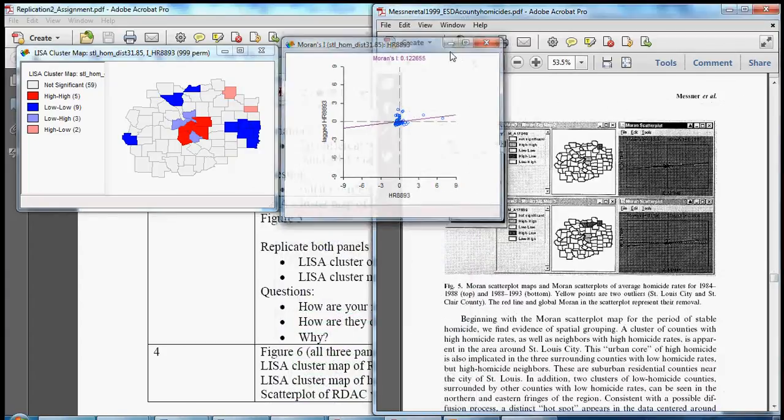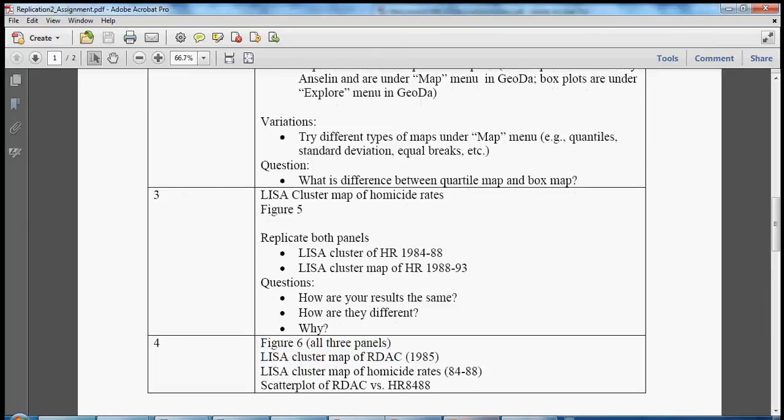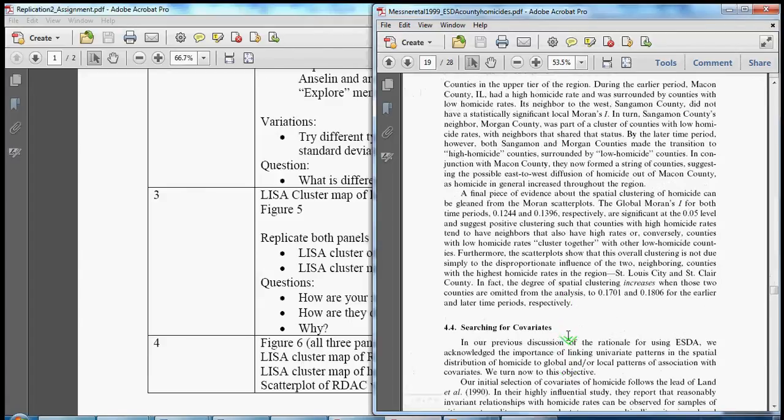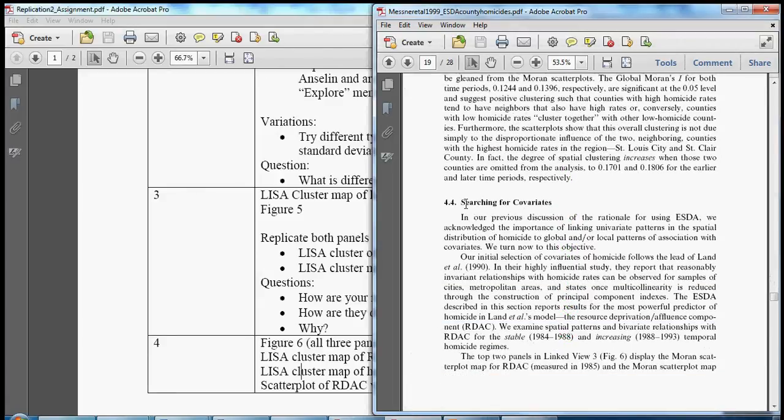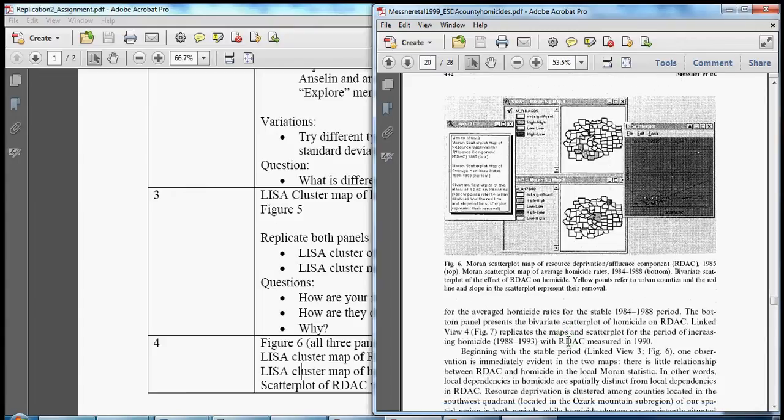Continuing with the replication let's close these maps out and move on to figure six. All three panels of figure six. In figure six you'll see that that's under the section about covariates or searching for covariates. And there's again a review of some of the material that we talked about in Baller et al. Again this is the same research team as the team that published Baller et al. This is the early sort of exploratory stage of that same project.